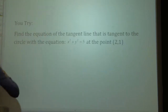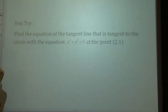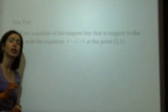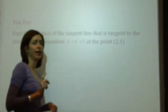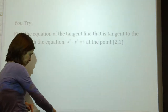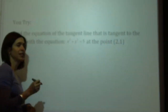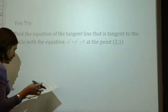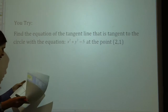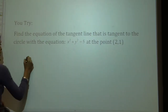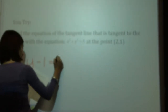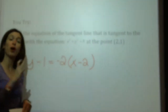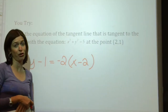I want you to try to find the equation of a tangent line that is tangent to the circle x squared plus y squared equals 5 at the point (2, 1). Pause the video here and go ahead and try that problem. When you come back, the answer should be y minus 1 equals negative 2 times (x minus 2). Don't just write the answer down — I am going to be looking for work when I come around to check your homework tomorrow.